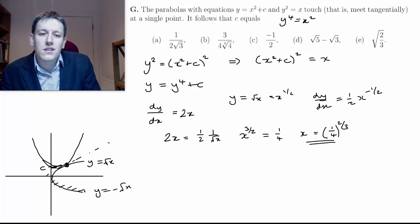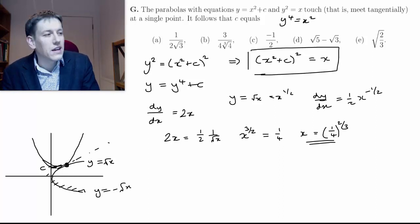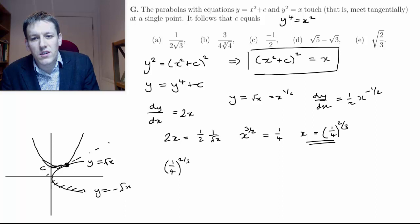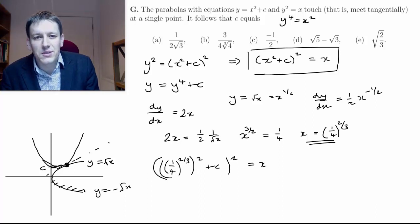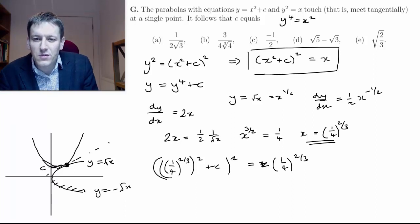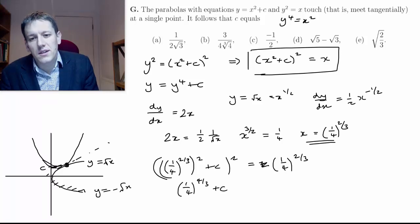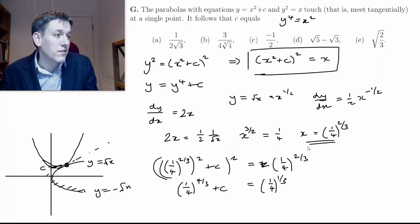So this value of x is the point where the two curves meet. If I go back to this equation that I had here and plug in the value of x that I've just found, then that will tell me the value of c. So I've got [(1/4)^(2/3)]² + c² is going to be equal to x, which is (1/4)^(2/3). This shouldn't be too hard to deal with now. (1/4)^(2/3) squared is (1/4)^(4/3) + c². If I square root both sides or raise to the power of 1/2 both sides, on this side I'm going to get (1/4)^(2/3) to the 1/2, so to the 1/3.